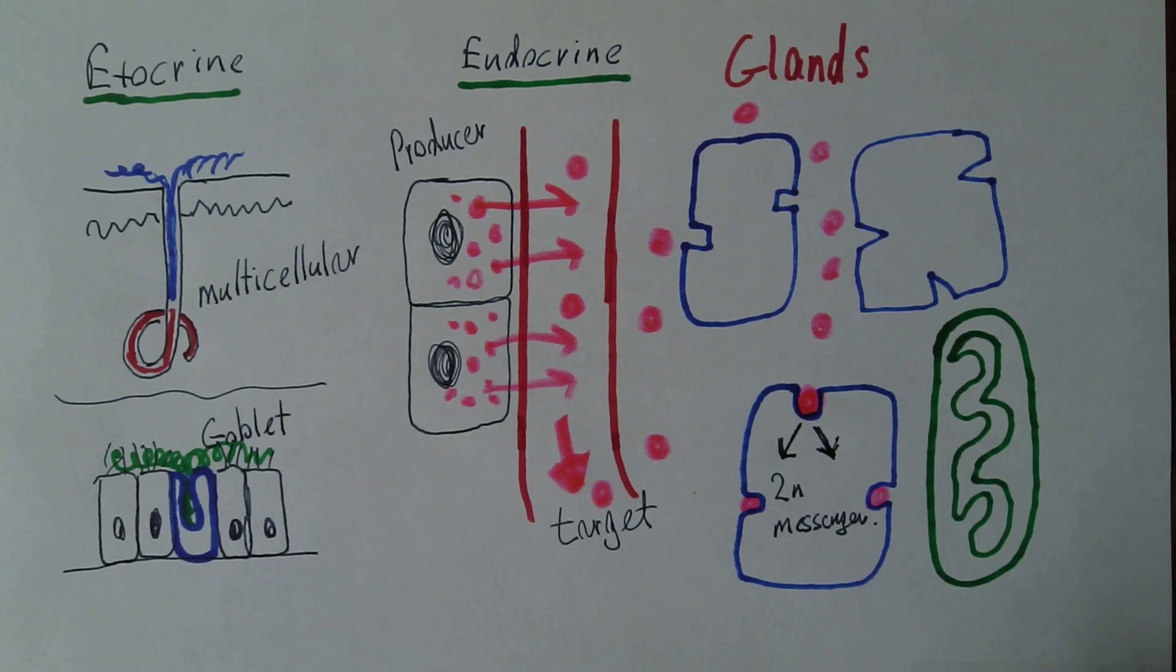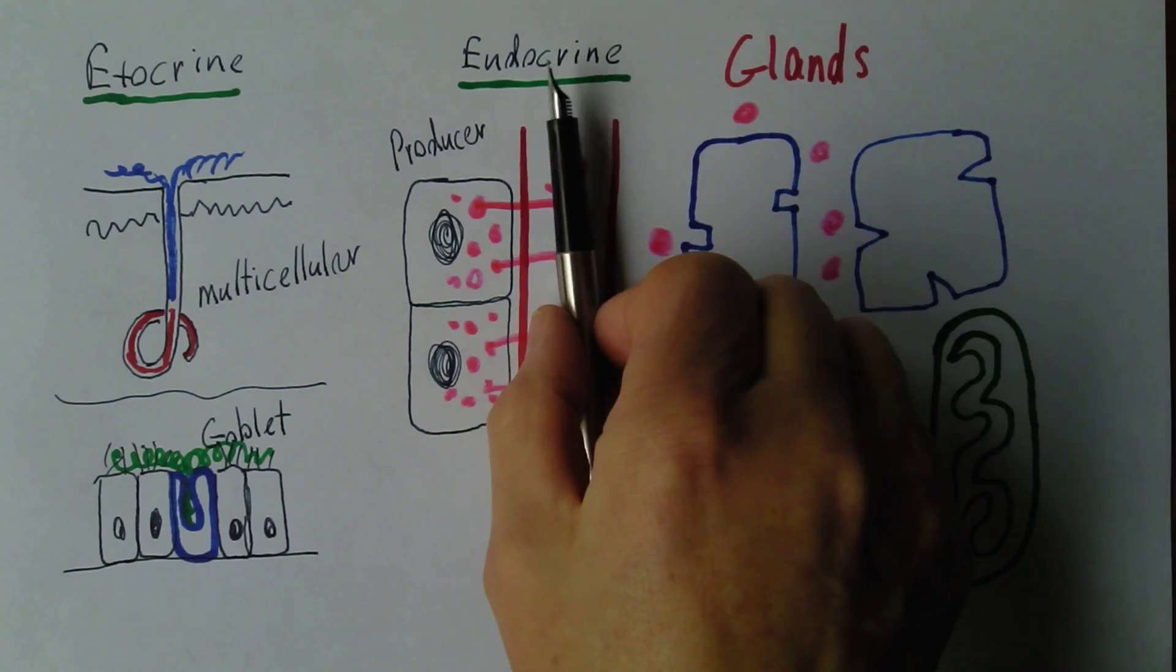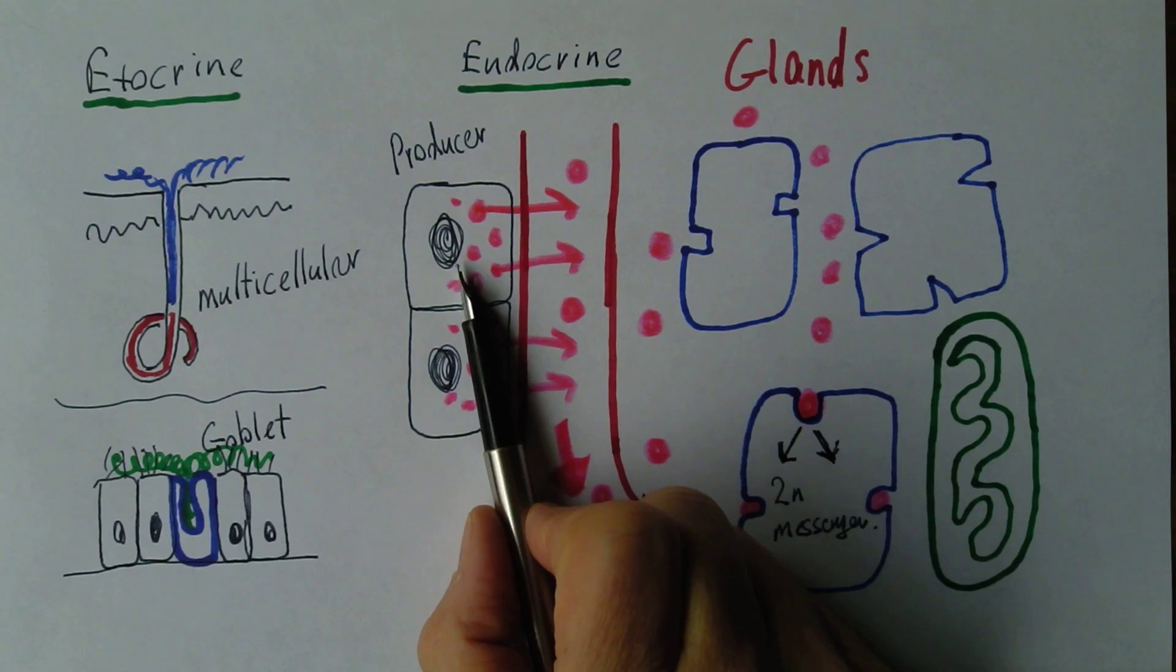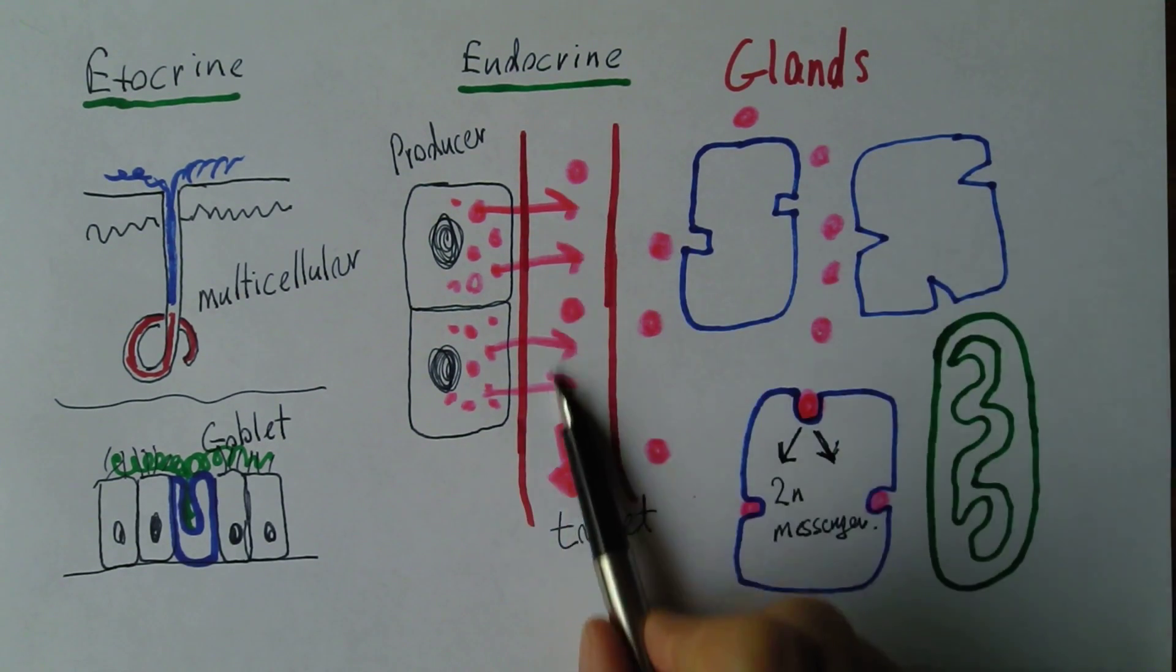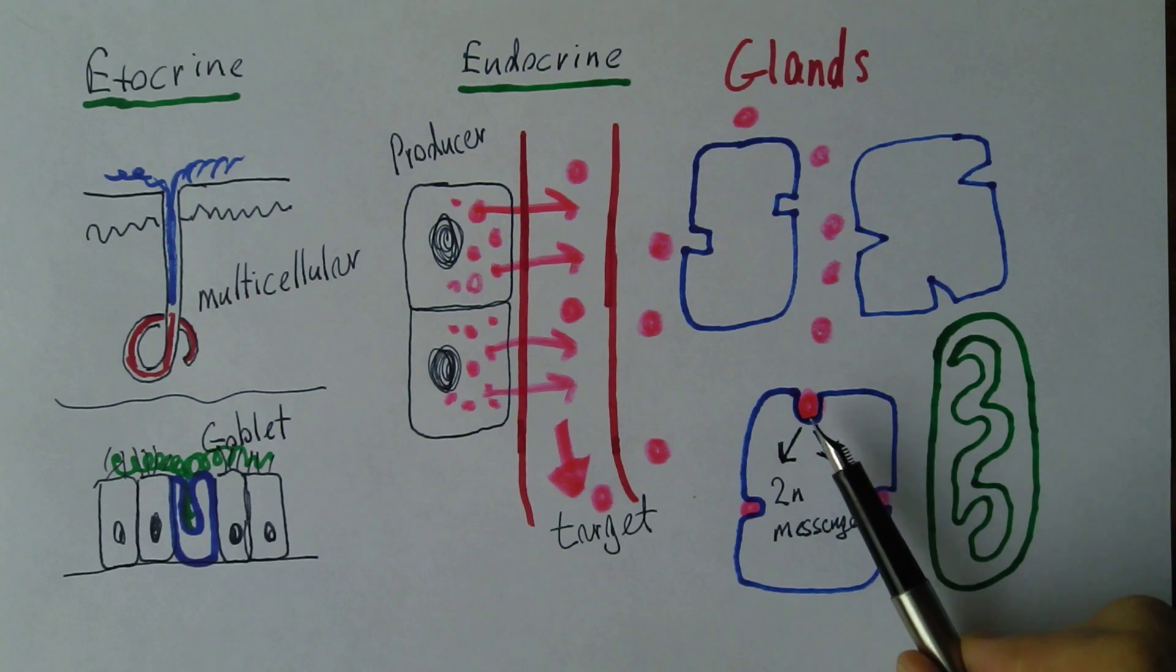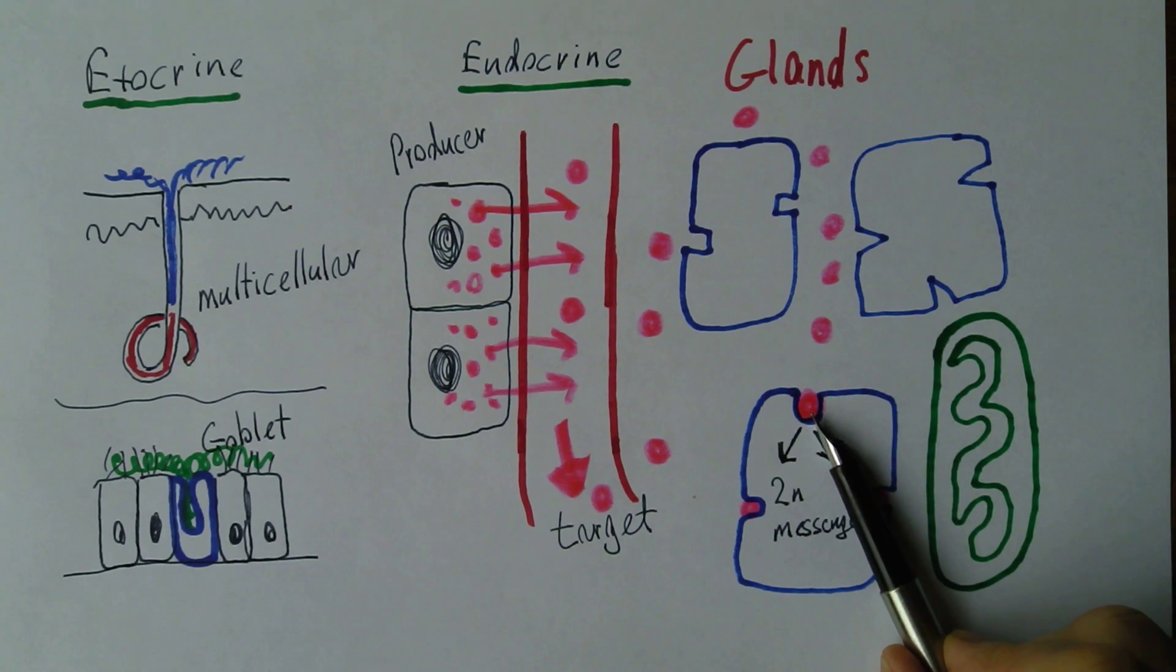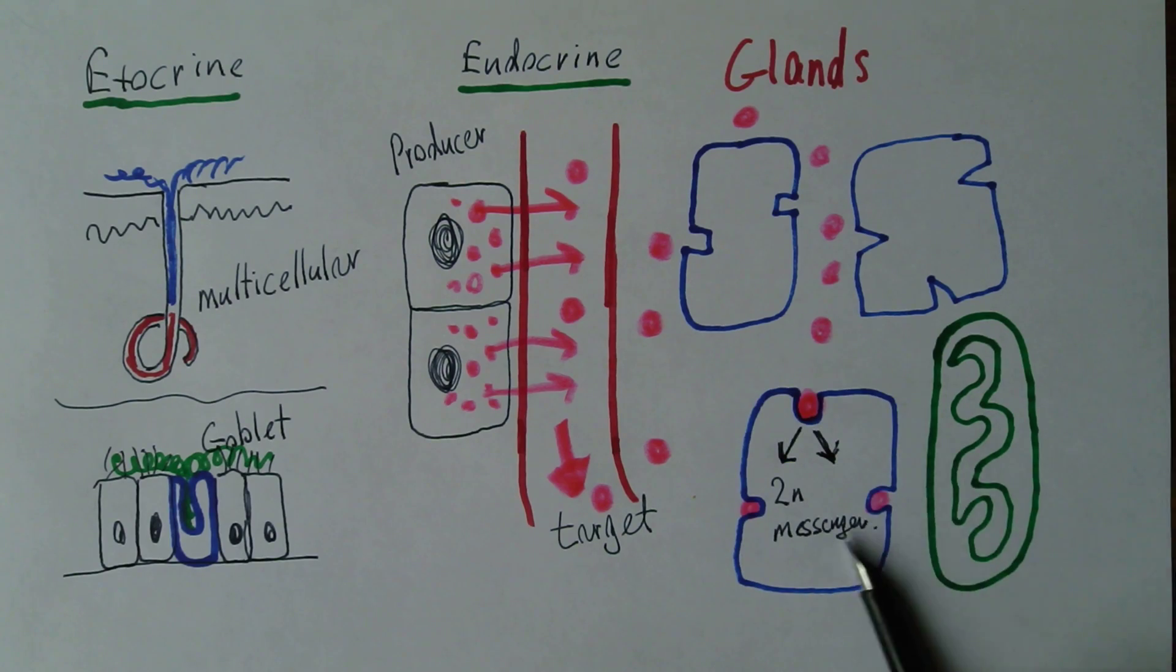So remember, glands are exocrine or endocrine. The endocrine produces endocrine hormones. Endocrine hormones are chemical messengers produced by producer cells, circulating systemically in the blood and tissue fluids, interacting with specific receptor proteins to regulate the physiological activity of the cells that the hormone is communicating with. Having a physiological effect inside the cell, thereby controlling physiological processes.